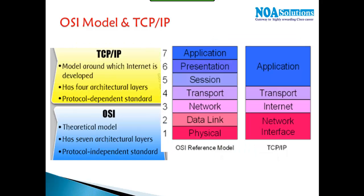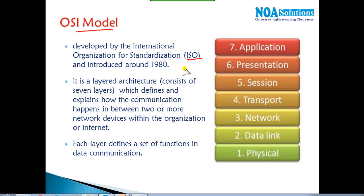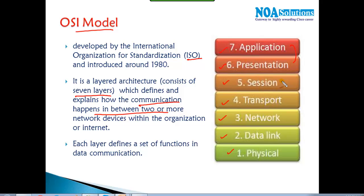Practically we learn the OSI model, but for practical implementations we use TCP/IP. OSI has seven different layers — it's a theoretical model developed by ISO (International Organization for Standardization) around the 1980s. It provides a seven-layer architecture explaining how communication happens between two or more networking devices, whether within an organization or over the internet. Those layers are: Physical, Data Link, Network, Transport, Session, Presentation, and Application layers.